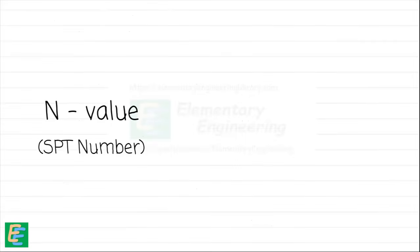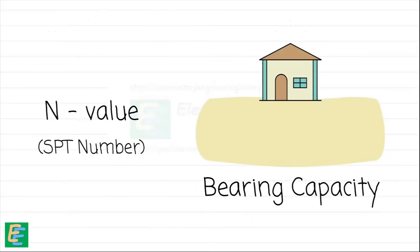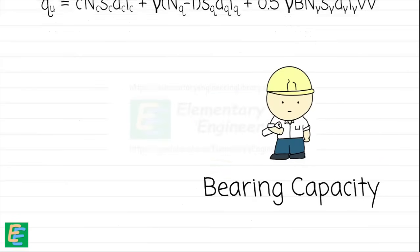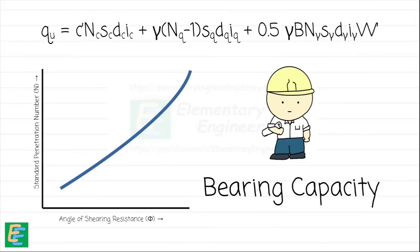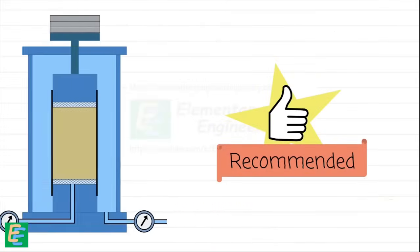The N value is also used to estimate the bearing capacity, a measure of how much load the soil can safely support. Engineers use standard formulas and empirical correlations to convert the N value into the estimated bearing capacity. However, since these correlations provide only an estimate, for more precise determinations it is advisable to conduct a shear test to accurately measure the soil's strength.